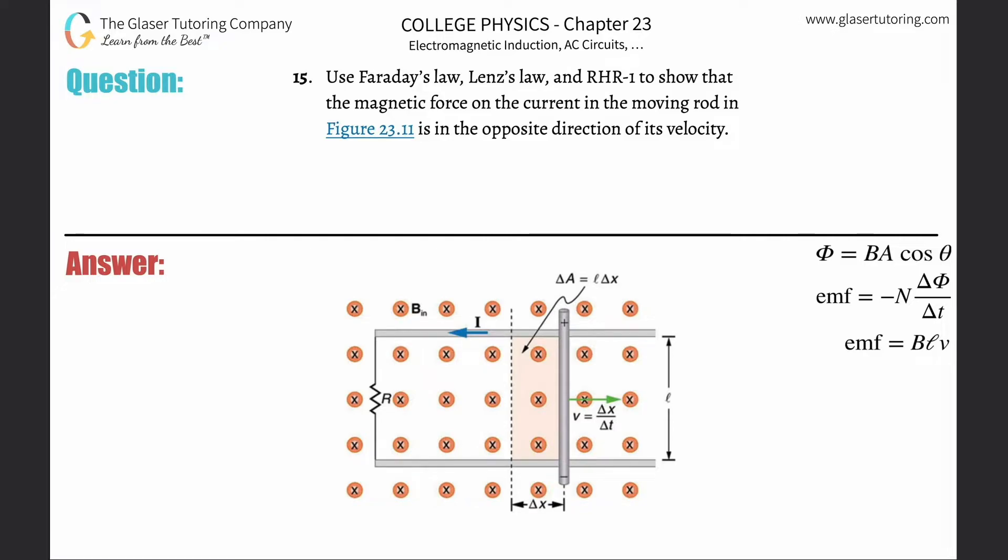Number 15: Use Faraday's law, Lenz's law, and right-hand rule number one to show that the magnetic force on the current in the moving rod in Figure 23.11 is in the opposite direction of its velocity. So first, take a look at this.